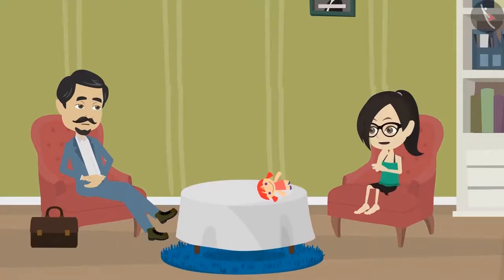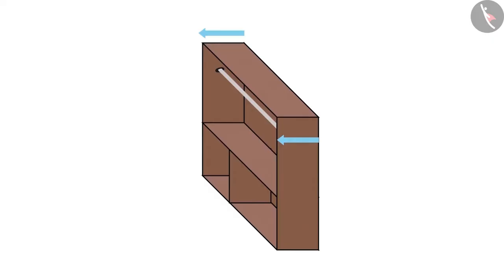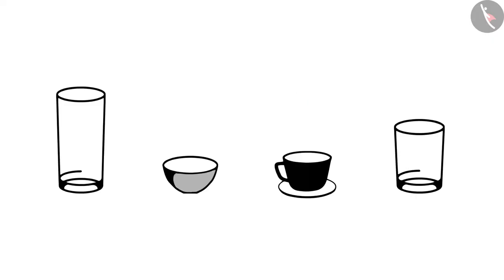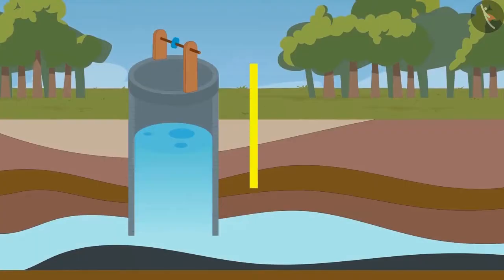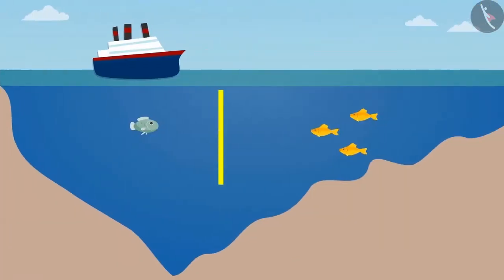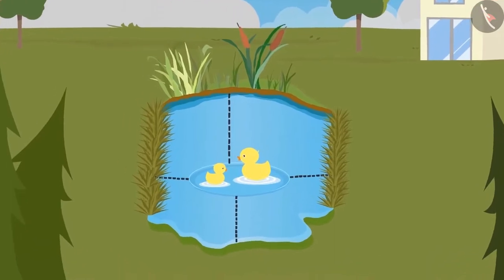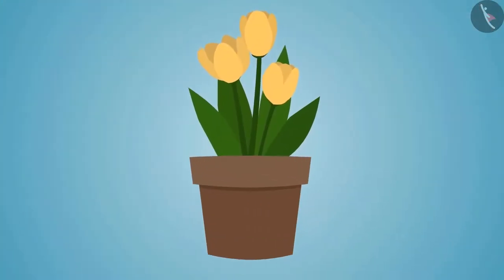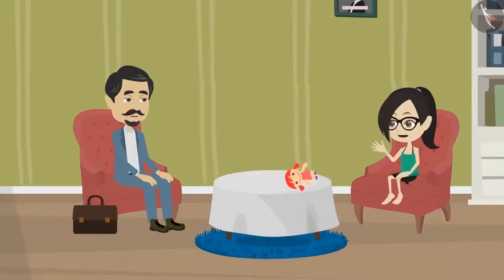What are the other objects whose depth can be measured? You have already discovered examples of pits, cupboards and kitchen utensils whose depth is measured. Similarly, the depth of the well is measured, the depth of the sea is measured, the depth of the pond is measured, and the depth of a planter is also measured. And the depth of all these is measured in centimeters and meters?